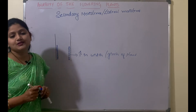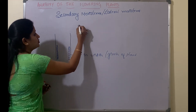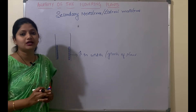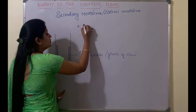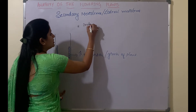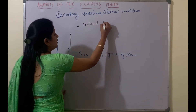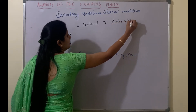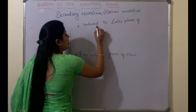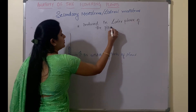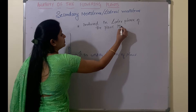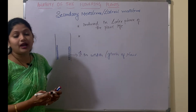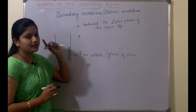When are these produced? These are not produced in the early phase of the plant life. These are produced in the later phase of the plant life. Since they are being produced in the later phase, they are called as the secondary meristems.